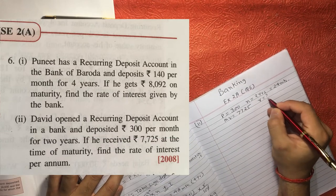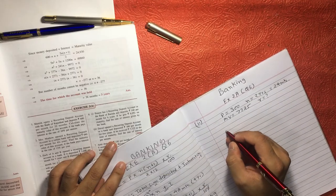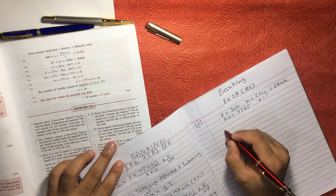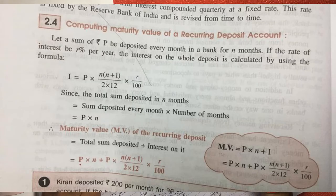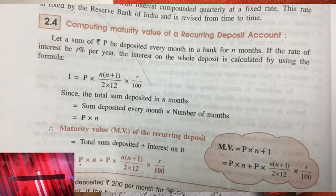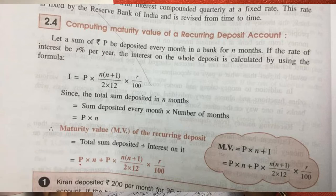So again is asking what? R. No need of confusion anywhere, it's simple. The same formula what we are using so many times, which is I is equal to P into N into (N plus 1) oblique 2 into 12 into R by 100.